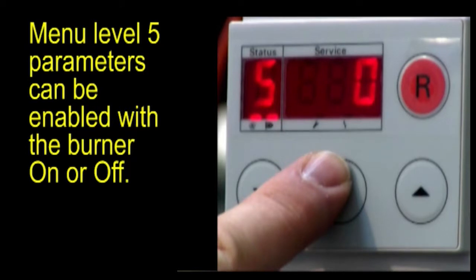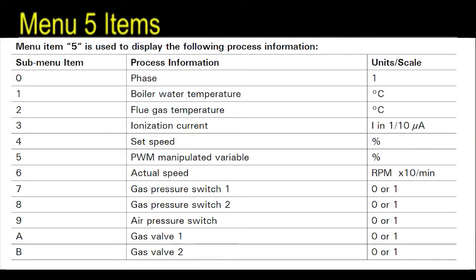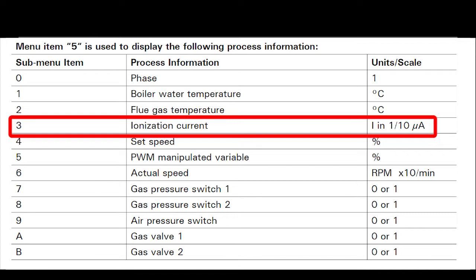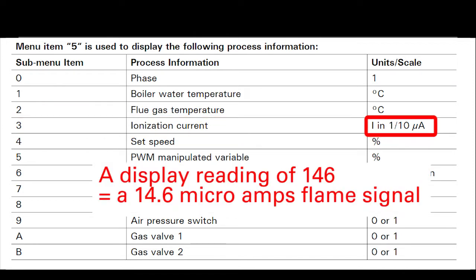Flame signal is located in the menu 5 level. A chart of the level 5 menu items can be found in the CM2 service manual. Flame signal can be checked at submenu level 3. At a 1 tenth microamp resolution, a displayed signal of 146 represents 14.6 microamps.